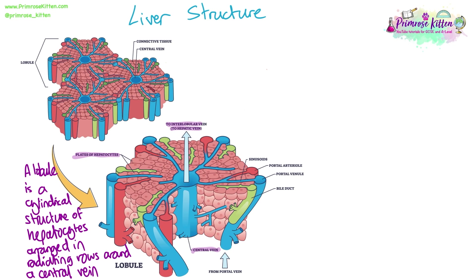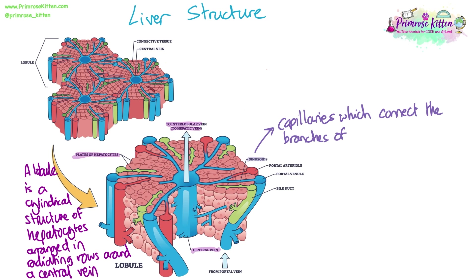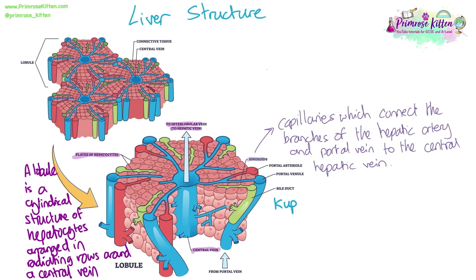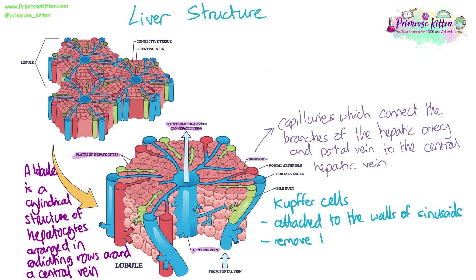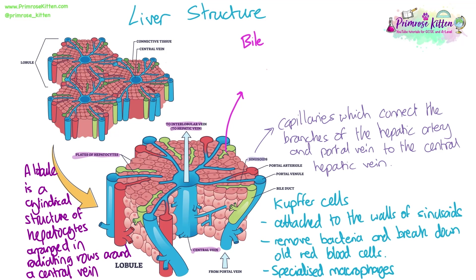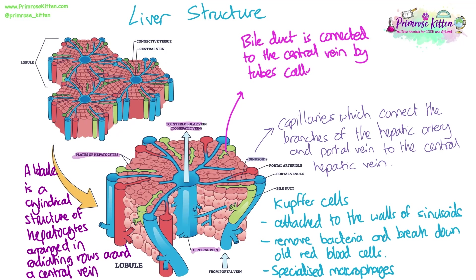There are many branches of the hepatic vein, the hepatic artery, and the bile duct all around each lobule that drain into the central vein. The capillaries that connect the branches of the hepatic artery and the hepatic portal vein are called sinusoids. Kupffer cells are attached to the walls of the sinusoids — they remove bacteria and break down old red blood cells. The bile duct is also connected by branches called canaliculi, which come from the same origin as the word canal, so a singular tube is called a canaliculus.